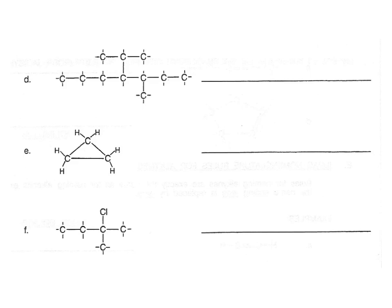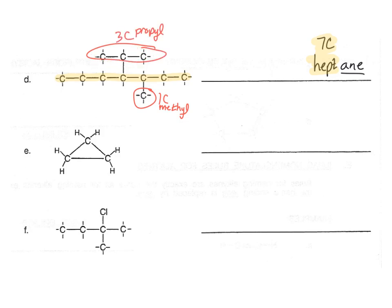Looking at compound D, we can see this is an alkane — a hydrocarbon with all single bonds — so the ending is -ane. The longest continuous carbon chain is seven, so we write hept-, giving us heptane. There are two substituents: one has one carbon (methyl) and the other has three carbons (some type of propyl). We need to decide if it's regular propyl or isopropyl. Iso means it is attached on the middle of the three carbons — this one is attached to the middle, so it is isopropyl. Alphabetically, isopropyl comes before methyl, so the name is isopropyl-[number]-methyl-heptane.